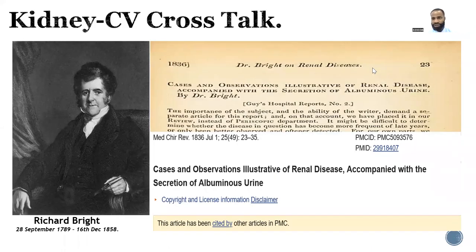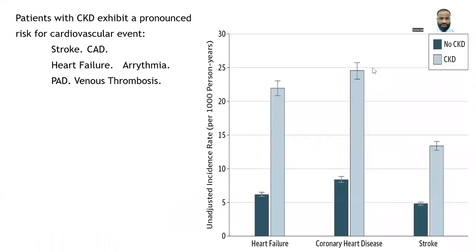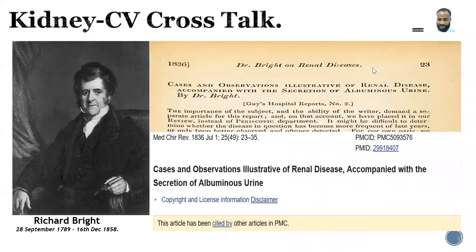Returning to the focus of today's discussion, we have to talk about the kidney and cardiovascular bonding in kidney disease. It is instructive to know that the relationship between the cardiovascular system and the kidney has been well established as far back as 1836, when Richard Bright first did his case series and found a relationship between cardiovascular disease and chronic kidney disease. For reference, Richard Bright is regarded as the father of nephrology, and the disease was named after him.